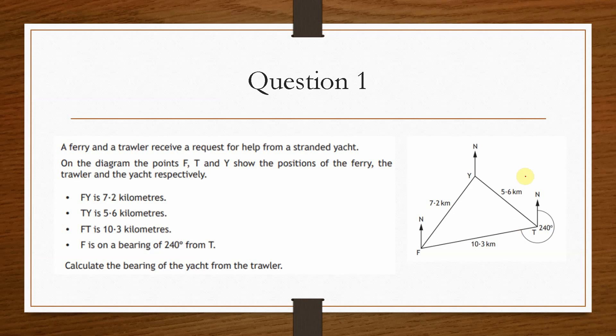And it wants us to calculate the bearing of the yacht from the trawler. So what this is actually wanting is this angle here, so from here all the way around to this point here. Because a bearing you always start at north and go clockwise until we hit the desired length or line that we're talking about. So we need to find this angle in here.